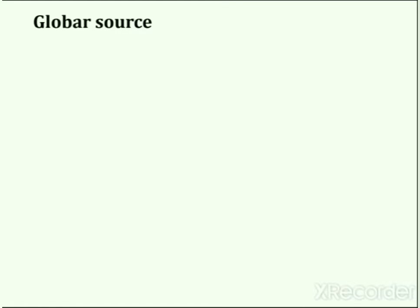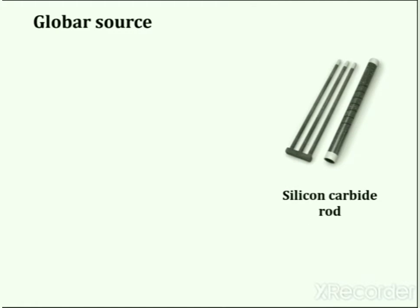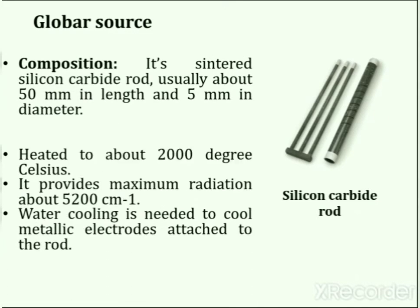The Globar source is composed of a rod of silicon carbide, usually about 50 mm in length and 5 mm in diameter. When this rod is heated to about 2000°C it provides radiation, with maximum radiation within the range of about 5200 cm⁻¹. The power consumption is normally higher than that of the Nernst Glower, and water cooling is needed to cool the metallic electrodes attached to the rod. The Globar source is less convenient to use, more expensive, and less intense than the Nernst Glower.